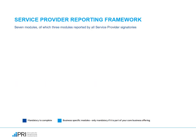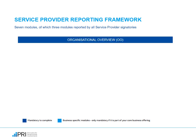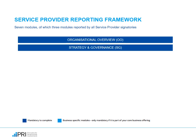To understand what you need to report on, it is important that you understand our Service Provider Reporting Framework. We have seven modules that are available for you to report on as service providers. Three are mandatory for all signatories to report on, and the other four are business-specific modules. First, you will complete the Organizational Overview Module, which will influence and determine the other modules that you will report on. This is a 'Get to Know Your Organization' section, and this module must be completed first for you to respond to the rest of the reporting framework. Next, you will respond to the Strategy and Governance Module. The questions in this module are about your overall approach to Responsible Investment, or ESG, at the organizational level. We ask about policies and processes in this module.